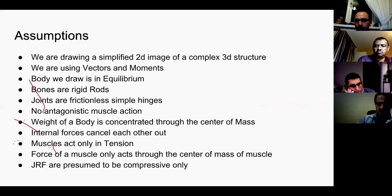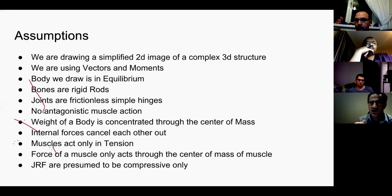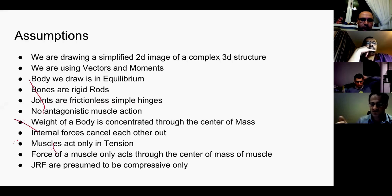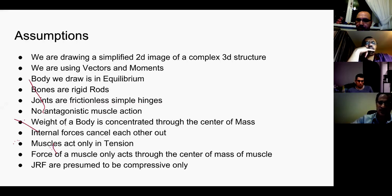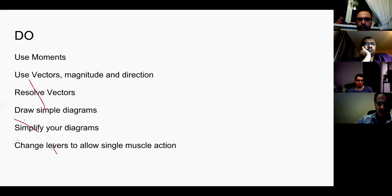Some assumptions you must state when drawing free body diagrams — things you must say to the examiners as you start drawing. We are drawing a simplified 2D image of a complex 3D structure, using vectors and moments. The body we draw is in equilibrium; bones are rigid; joints are frictionless simple hinges with no antagonistic muscle actions; the weight of the body is concentrated at the center of mass; internal forces cancel each other out; muscles act only in tension; muscle forces only act through the center of mass of the muscle; and the joint reaction force is presumed to be compressive only.